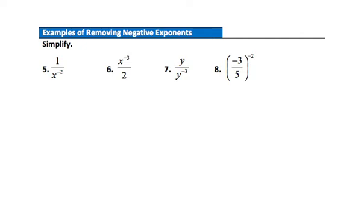Example 5: simplify a fraction where the negative exponent is in the denominator. To remove this negative exponent, move that factor to the numerator as x squared. The 1 that was there before is multiplied by x squared, simply giving x squared. With just 1 left in the denominator, x squared over 1 simplifies to x squared.